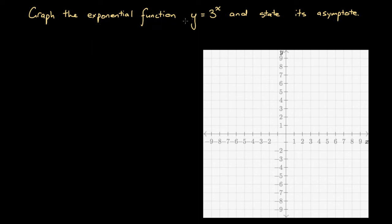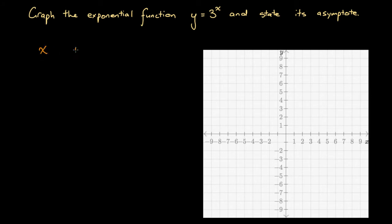Graph the exponential function y equals 3 to the power of x and state its asymptote. Whenever we're asked to graph an exponential function, a great way of going about it is to draw up a table of x values, plug each of those x values into the function, and record the corresponding y values. So let's draw up a table of x values and y values.